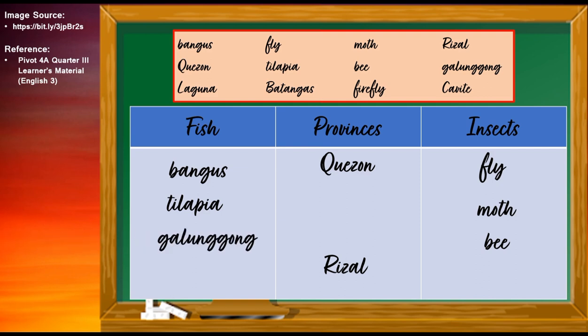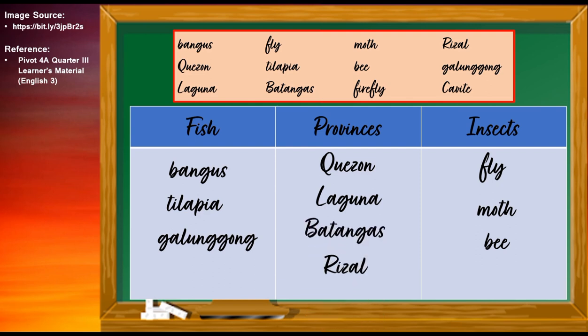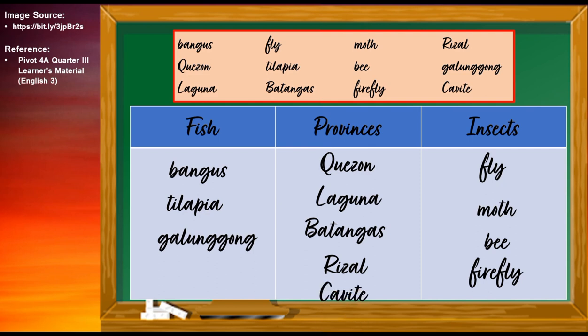Galunggong belongs to the category of fish. Laguna belongs to the category of provinces. Batangas also belongs to the category of provinces. Firefly belongs to the category of insects. And the last word, Cavite, belongs to the category of provinces.